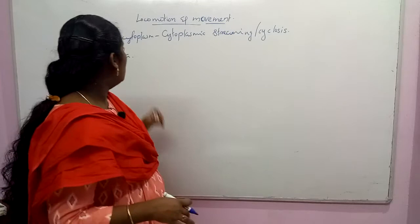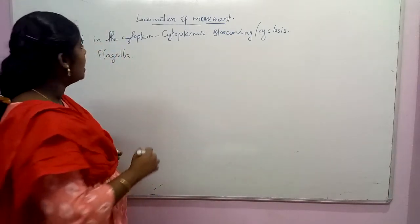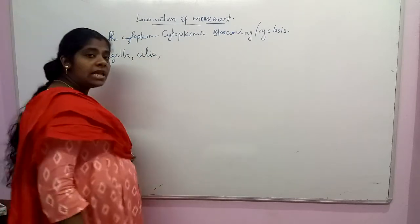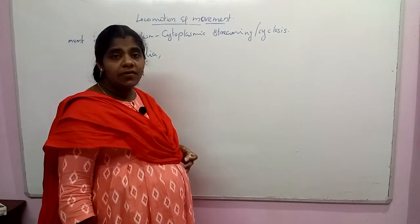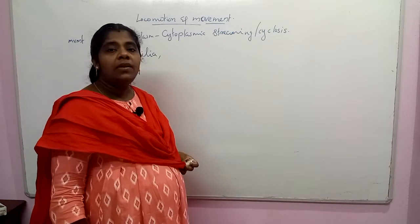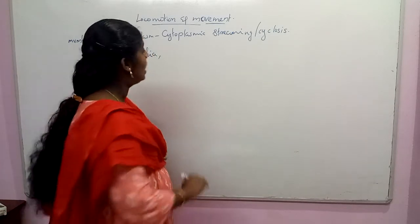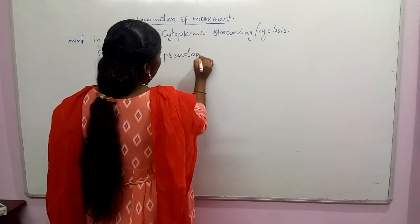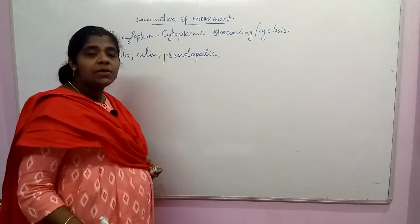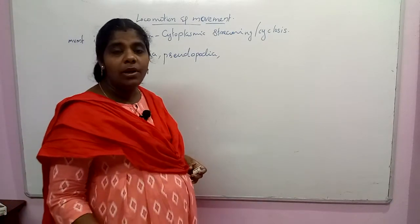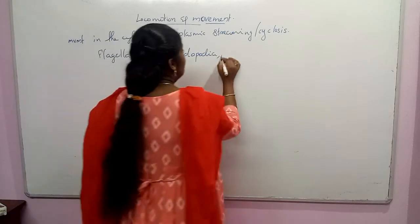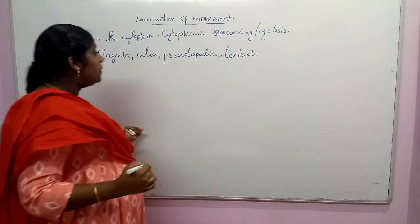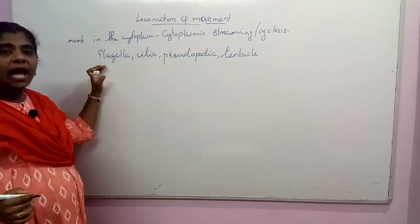In the case of paramecium, ciliated movement occurs — it undergoes movement with the help of cilia. In the case of amoeba, movement occurs with the help of pseudopodia. In hydra, tentacles are present which help in locomotion as well as prey capturing. Tentacles are a locomotory organ in lower organisms.